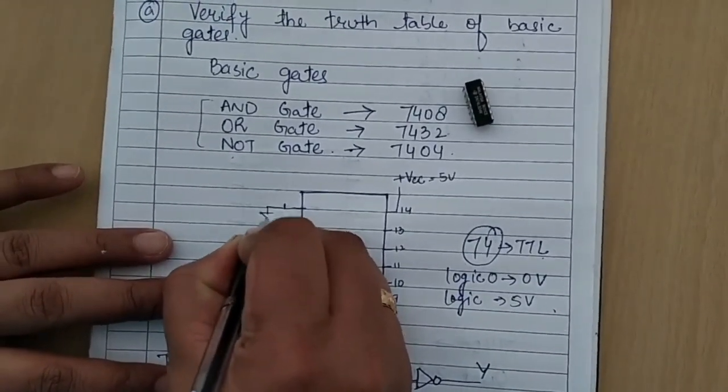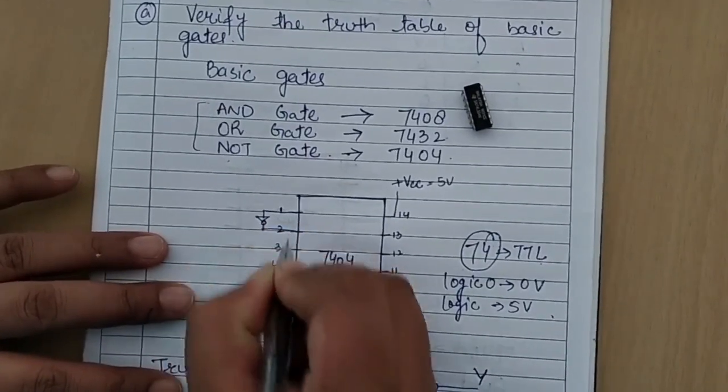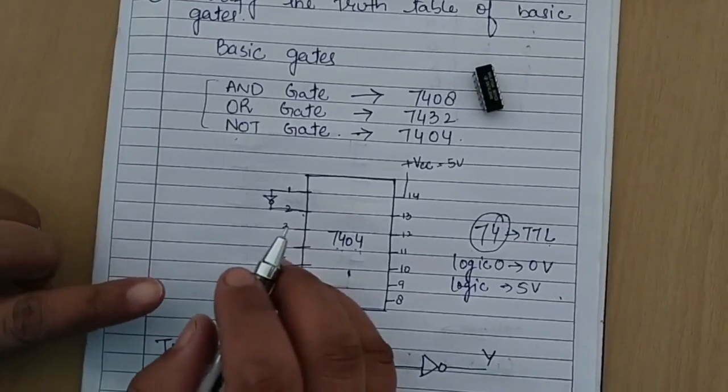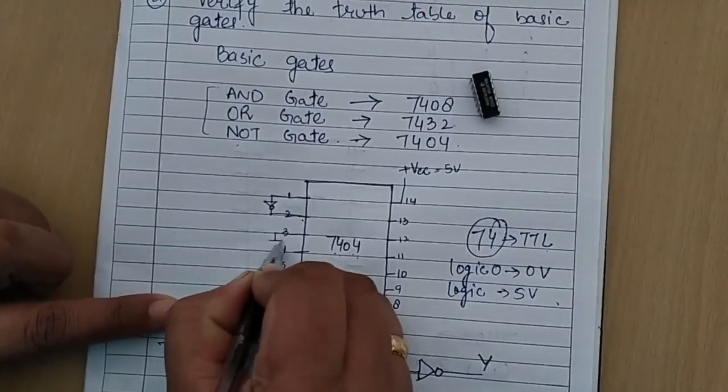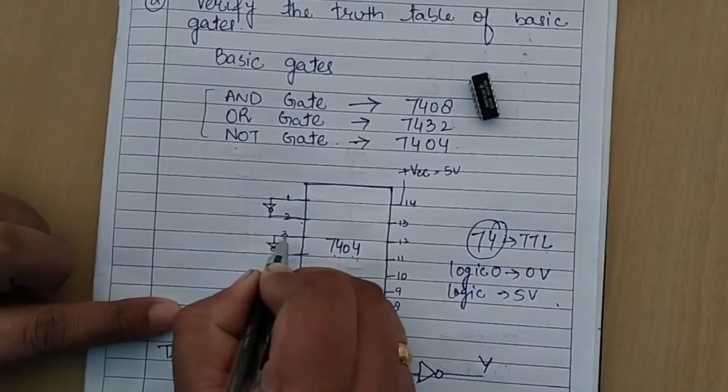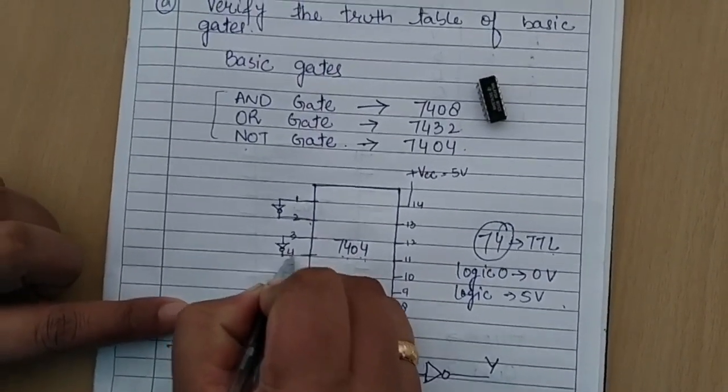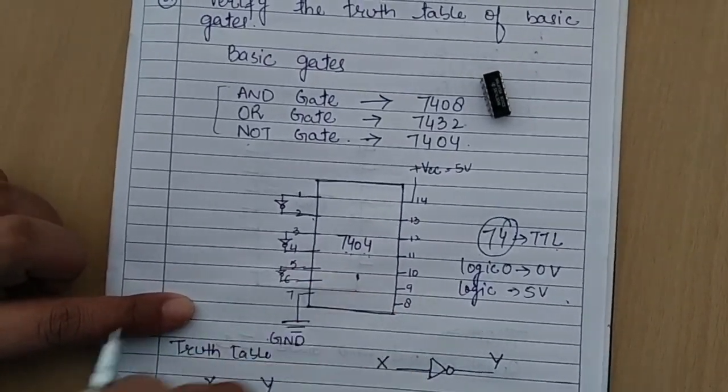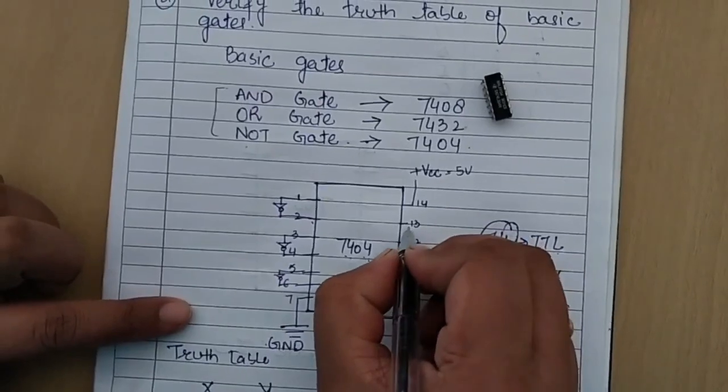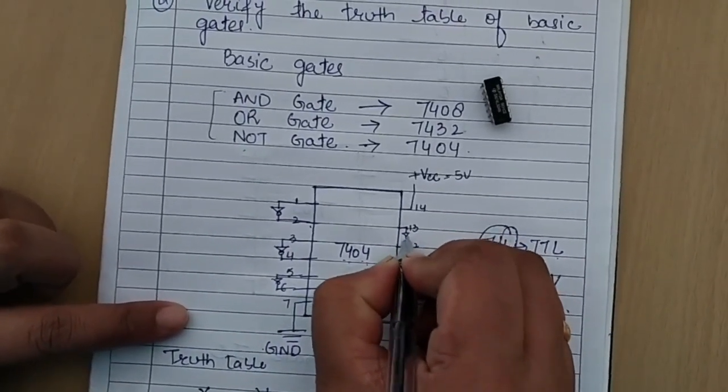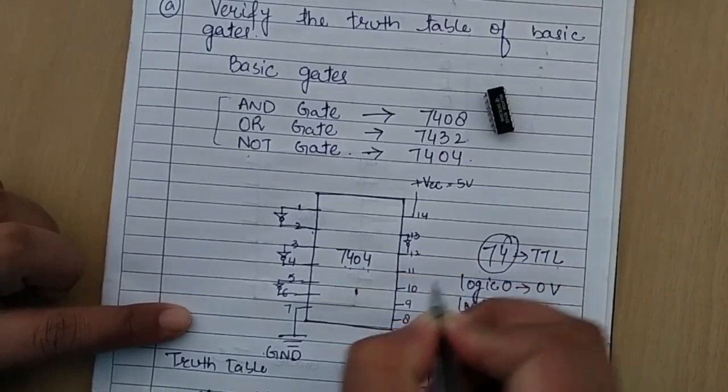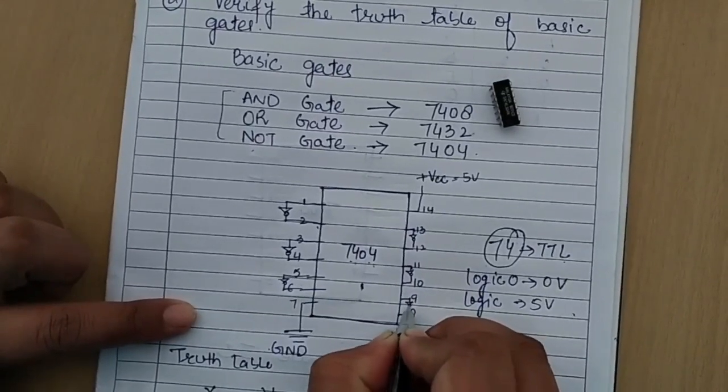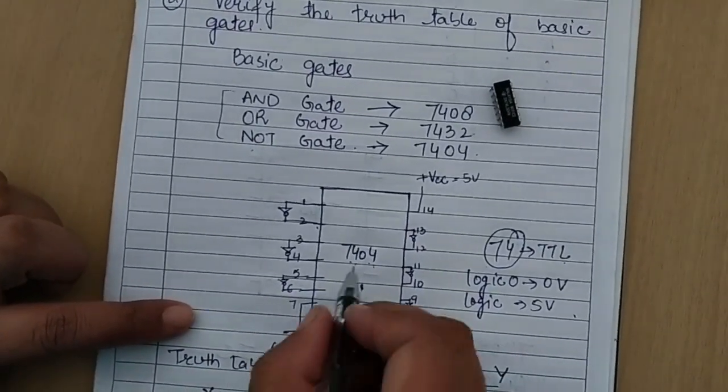In IC 7404, at pin number 1 we will give input, and its output is connected to pin number 2. We cannot change this pin configuration. At pin number 3, input goes to another NOT gate, and output comes at pin number 4. Similarly, pin 5 and 6, then from this side pin 13 is input and pin 12 is output, same for pins 10-11 and 8-9.